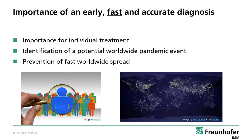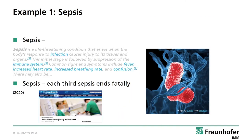Currently, there are some diseases that require a specific and rapid diagnosis. These have also received attention in the mainstream media, and for good reason. First example: sepsis. Sepsis is caused by an infection and may lead to an overreaction of the immune system, ending with the suppression of the immune system. Every third sepsis case is fatal, and only a quick diagnosis leads to the right choice of medication.